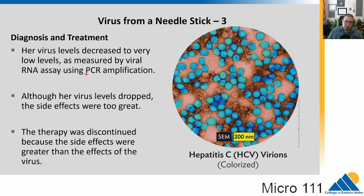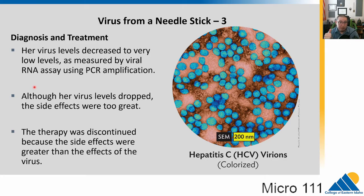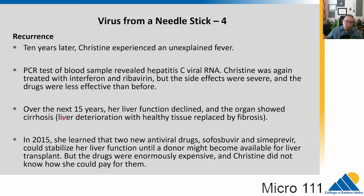They continue monitoring her, and viral levels decrease to very low levels. They use RNA from her blood and run a PCR test — her virus levels are dropping. But the side effects of the drugs are rather great, and this is a theme we'll see over and over: there are very few antiviral medications, and they often have strong side effects because viruses use our cellular machinery to reproduce. To stop that, we generally have to interfere with our own cells.